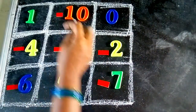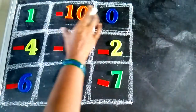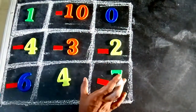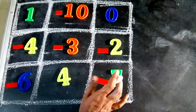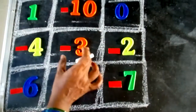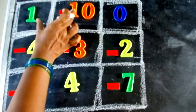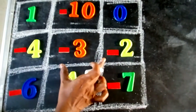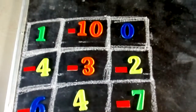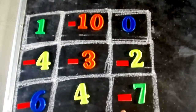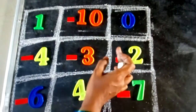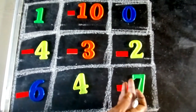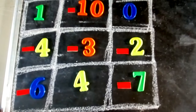Each square is filled with numbers. Now students, here there are three columns, three rows and three diagonals. Where is the column, where is the row, where is the diagonal?